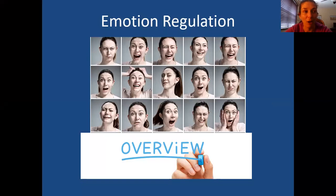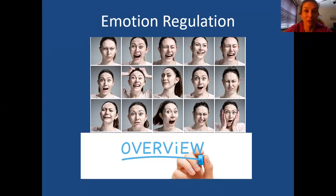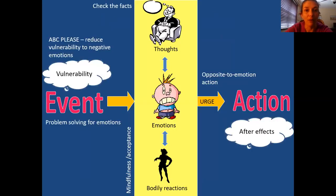So these skills kind of help us to control what we're feeling, how long we're feeling it, the intensity of the emotions, and give us some coping skills for when we're experiencing them. There's a whole bunch of stuff involved here. So this is like an overall diagram we could think about when we organize all the skills that DBT has to offer.